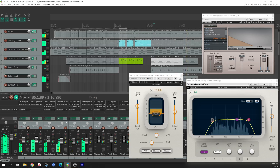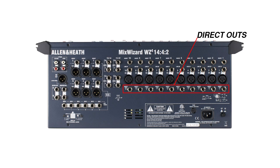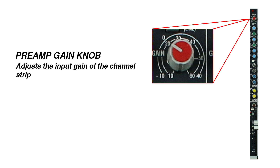Let's say you want to record several microphones all to separate tracks within your DAW. That way you'll have individual control of each instrument later while mixing. Rather than using the main outputs, you'll probably want to use the direct outputs for each channel.